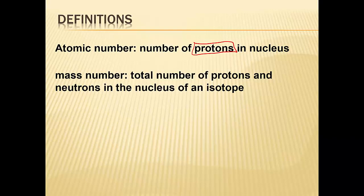Mass number — just think of it logically. What makes up the mass of an atom? Protons have mass, neutrons have mass. So the mass number is the total number of protons and neutrons. The mass number is a counting number. This will not necessarily be the same as the average atomic mass written on the periodic table — we're going to talk about how to calculate that in a couple of days. I'm just counting how many protons and how many neutrons with the mass number.